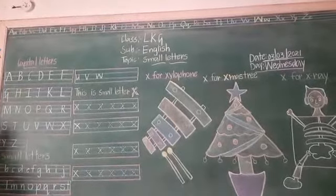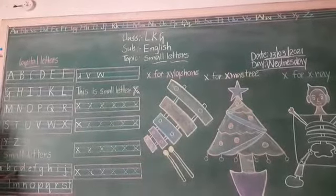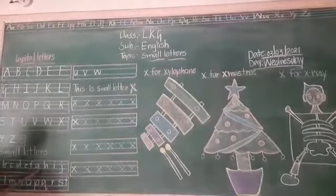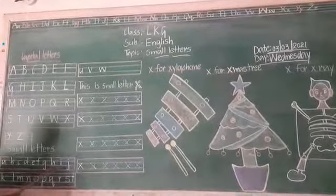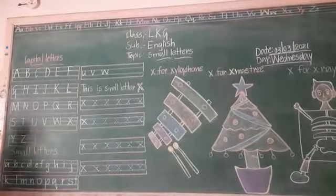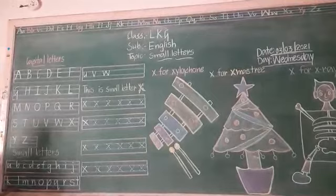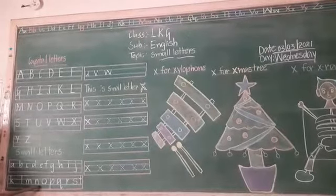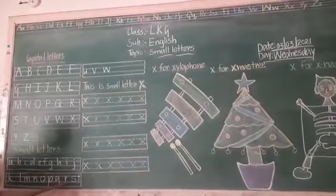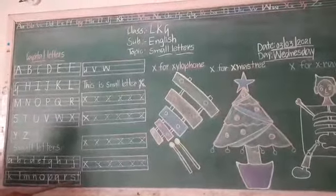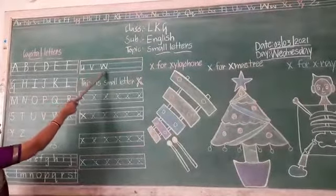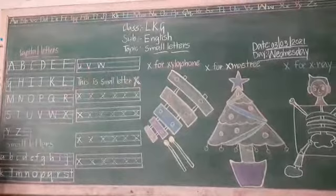Next, small letters: small a, small b, small c, small d, small e, small f, small g, small h, small i, small j, small k, small l, small m, small n, small o, small p, small q, small r, small s, small t, small u, small v, small w.